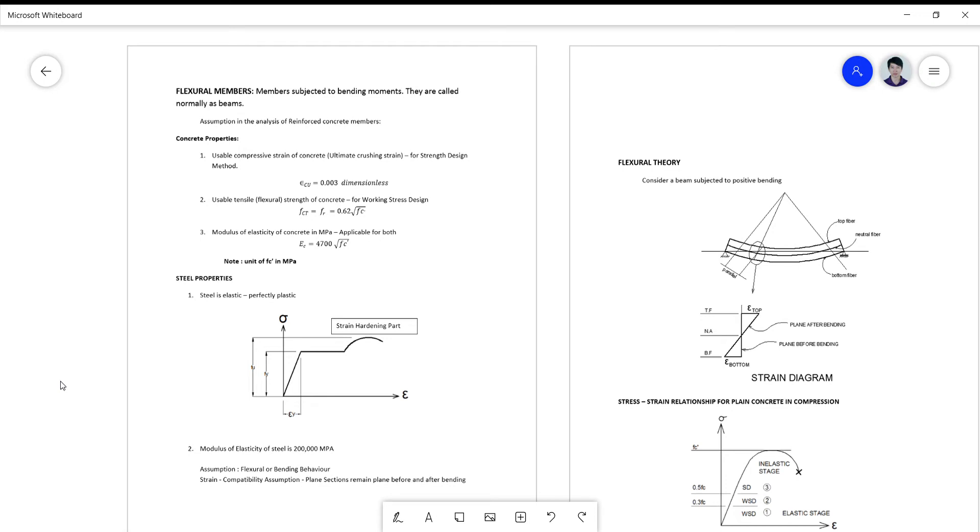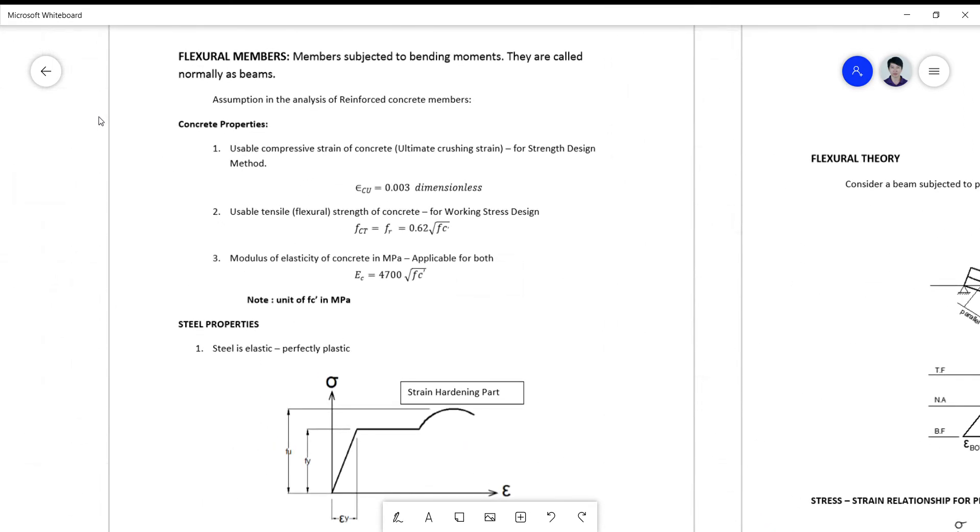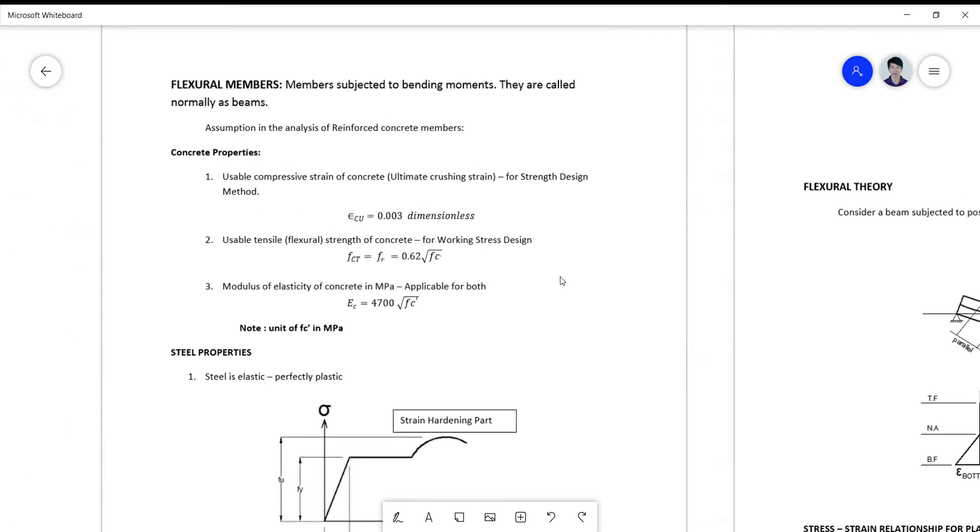Okay class, good morning. Today we are going to discuss flexural members, or members subject to bending moments, which are normally called beams. These are the following assumptions in the analysis of reinforced concrete beams or members. The first assumption is on the usable compressive strain of concrete used as a basis for strength design method.